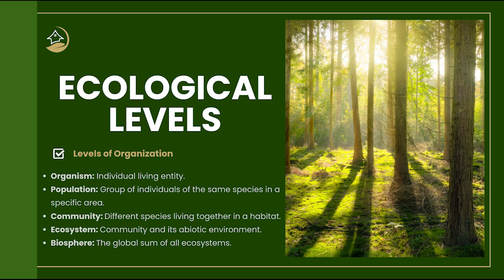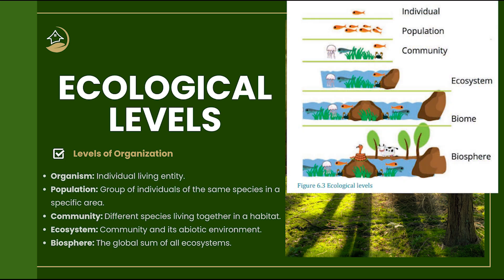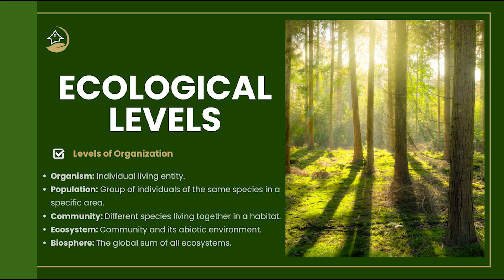In ecology, we study life at different levels of organization: organism, population, community, ecosystem, and biosphere. An organism is a single individual, like one zebra. A population is a group of the same species living in the same area, like a herd of zebras. A community is all the different species living together, like zebras, lions, and trees in the savannah. An ecosystem is a community plus the abiotic environment — soil, air, water, etc. The biosphere is the entire planet and all life on it, including all ecosystems combined. Each level is important in understanding how nature works, starting small and building up to the big picture.